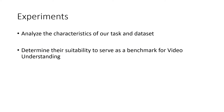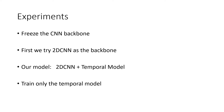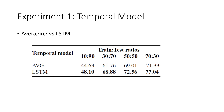Now we will move on to the experiments. Through experiments, we wanted to analyze the characteristics of our task and dataset and determine their suitability as a benchmark for video understanding. We kept the CNN backbone frozen and only learned the temporal model, considering a 2D CNN as the backbone. Currently, averaging of frame-level or clip-level features works best on many action recognition datasets, suggesting those datasets don't require true temporal modeling. We compared averaging versus LSTM and found that LSTM works better, which suggests our task and dataset requires true temporal modeling — a desired quality in a video understanding benchmark.